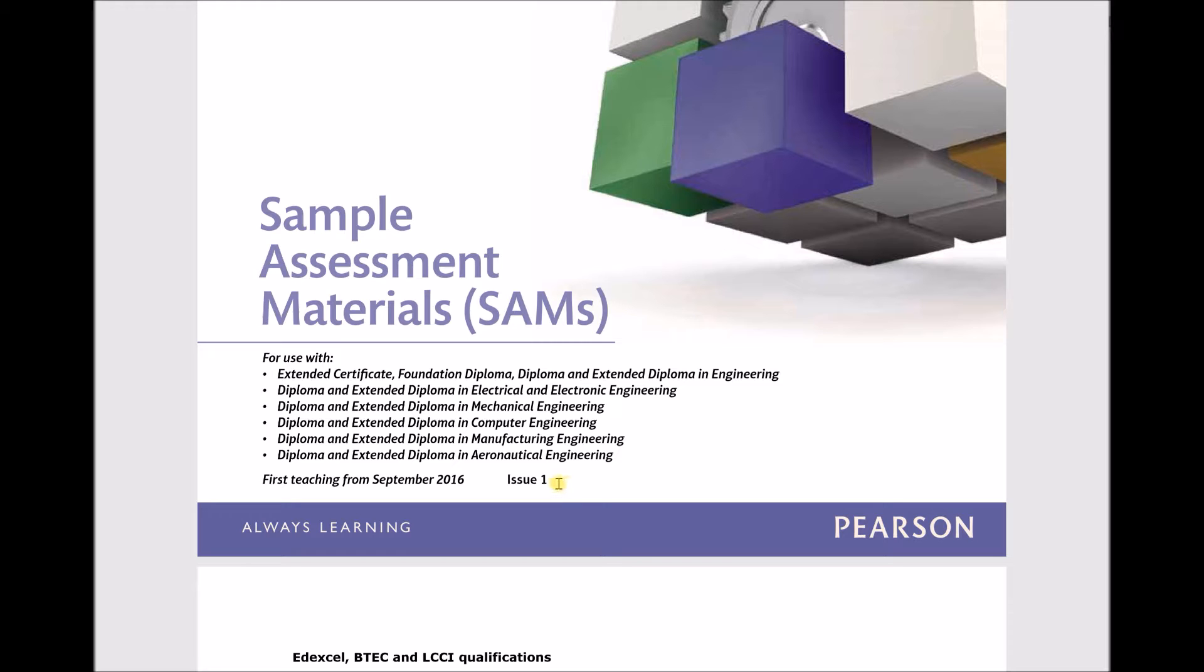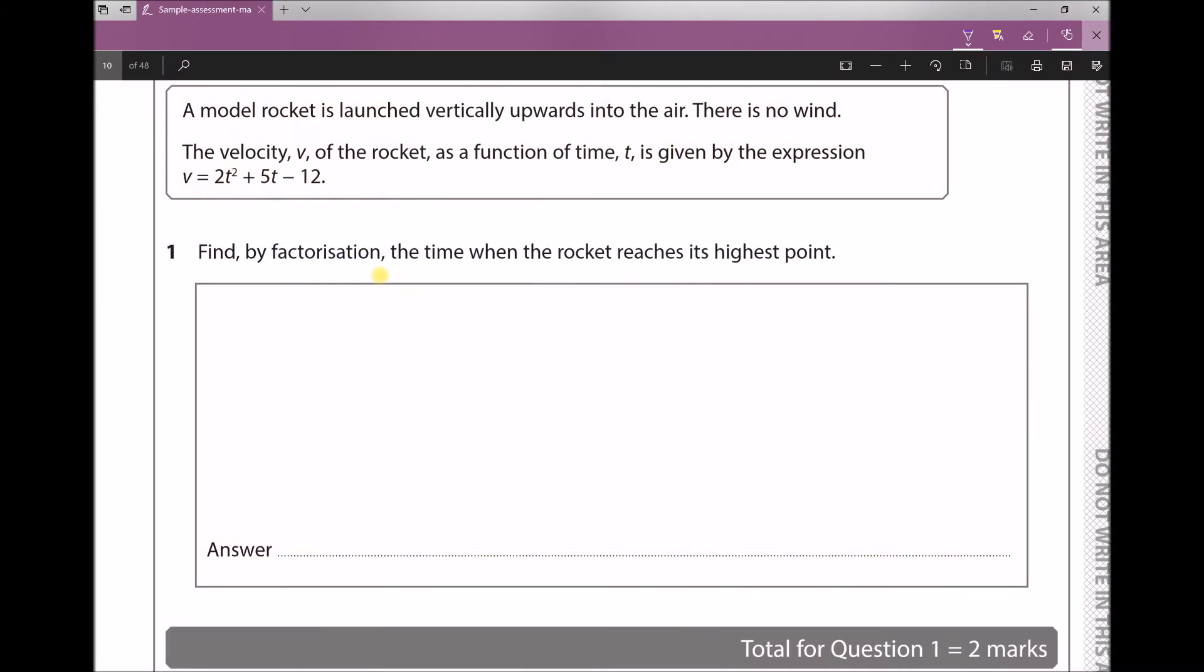Question 1 states: A model rocket is launched vertically upwards into the air. There is no wind. The velocity v of the rocket as a function of time t is given by the expression v = 2t² + 5t - 12. The question asks: find by factorization the time when the rocket reaches its highest point.